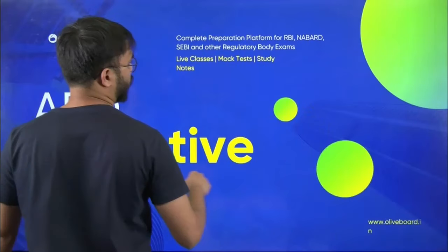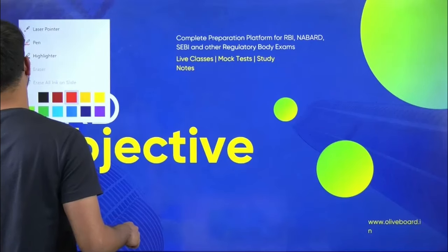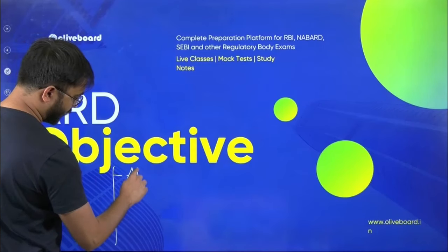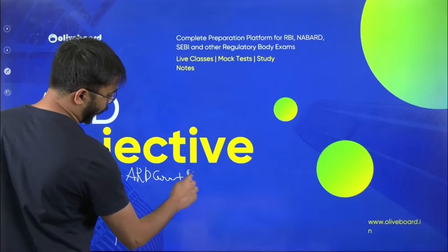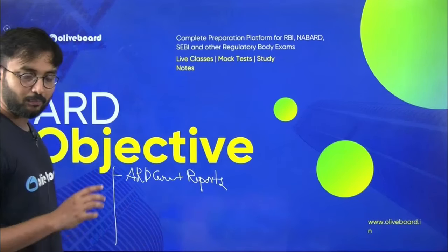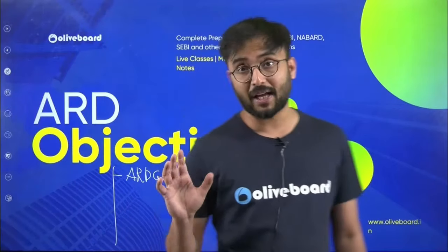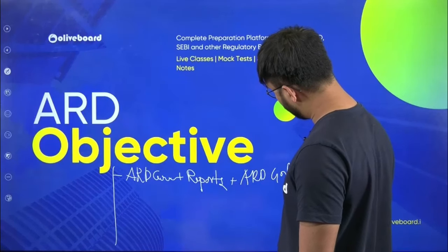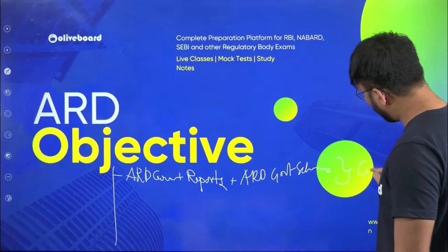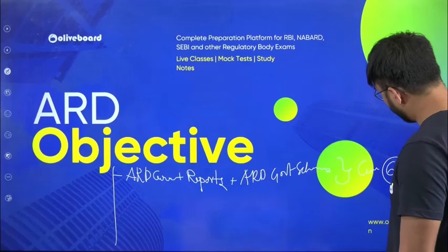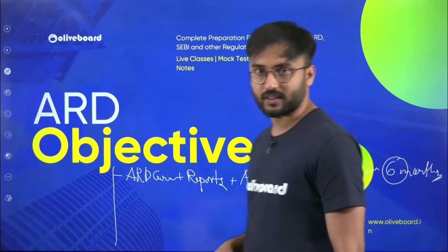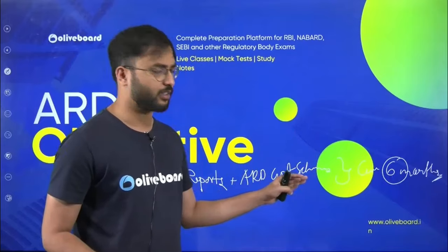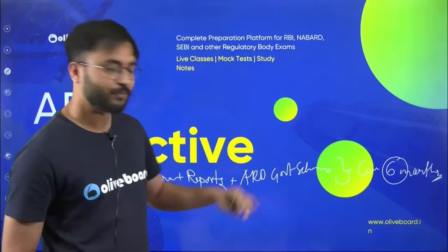Let's make a list of all important topics for NABARD Phase 2. The first topic is ARD current affairs and reports — any government scheme, any report, any ARD-related current affair from the maximum six months before Phase 1 and Phase 2 exams could be considered for a two-marker question.